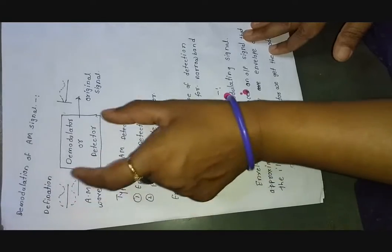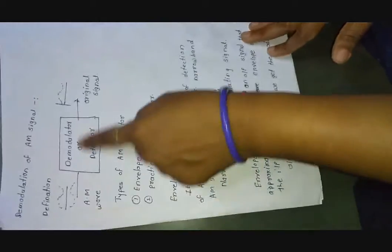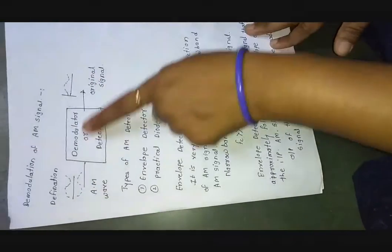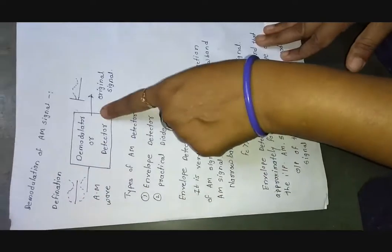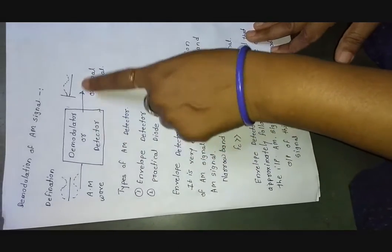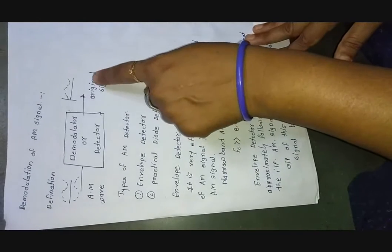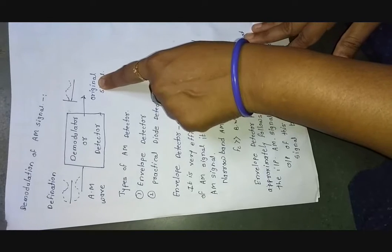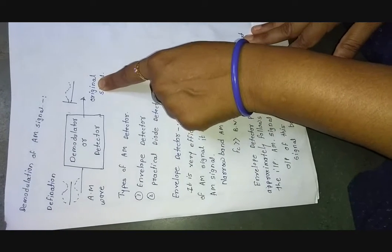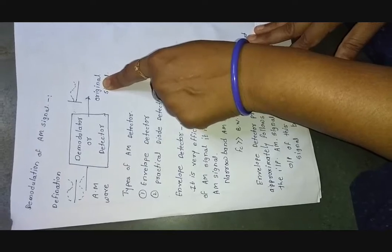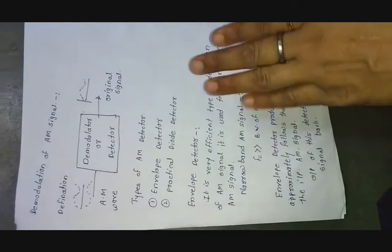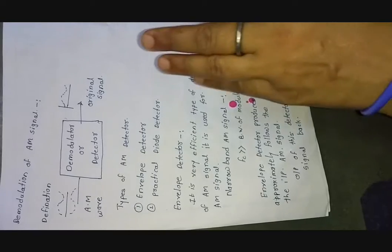For AM signal demodulation, using one simple block, I will show how we convert the AM modulated wave into original format. The AM modulated wave is applied to the detector or demodulator block, and it introduces the original signal — that is our modulating signal, also called the information signal or message signal. The input data can be in any form: video, audio, speech, symbol, and so on.